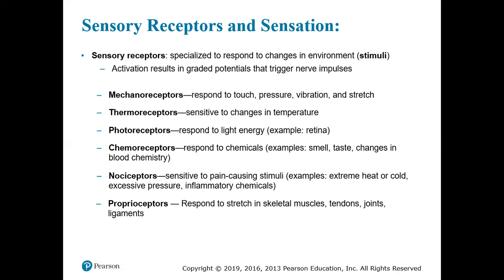A thermoreceptor will be sensitive to changes in temperature. When we have photoreceptors, these are sensory receptors that will respond to light — we find that in the retina, for example. A chemoreceptor is a type of receptor that will receive information about chemicals, such as smell and taste. We have these at various points of our cardiovascular system as well.